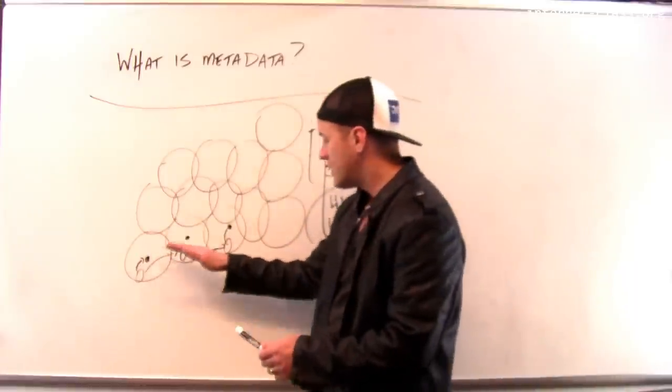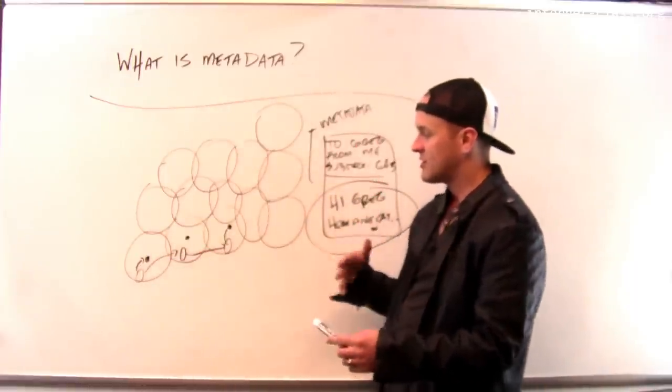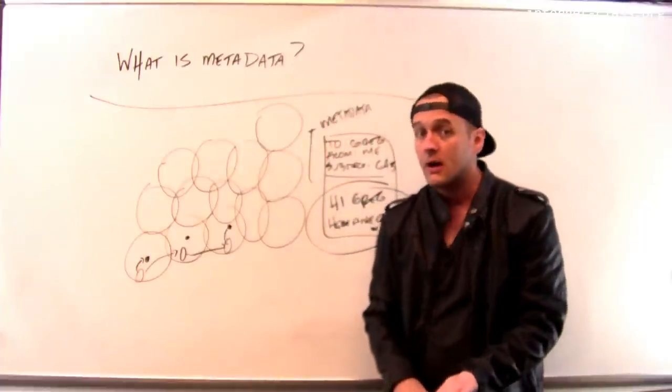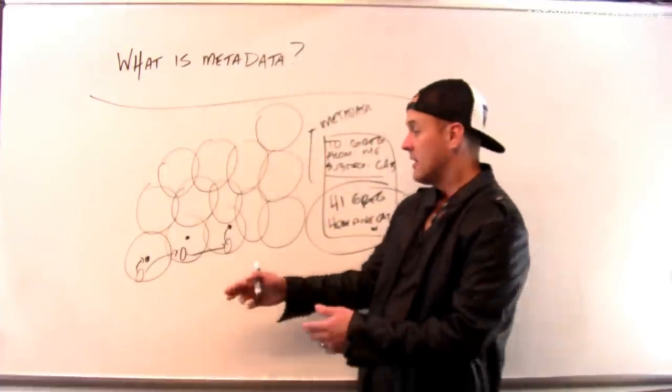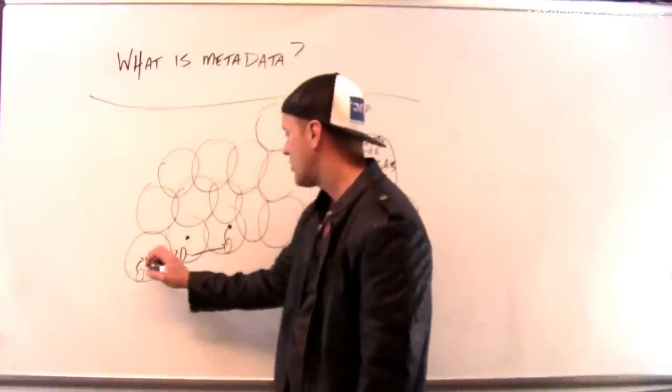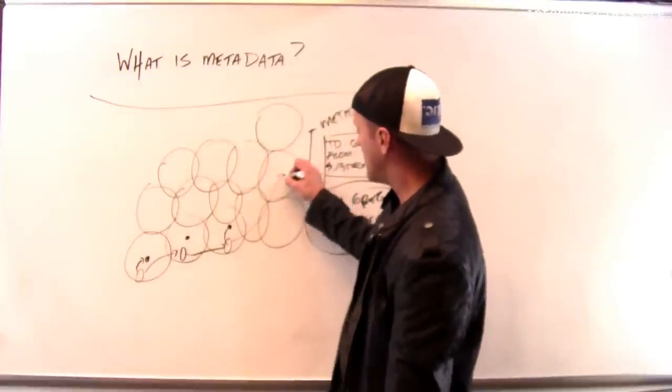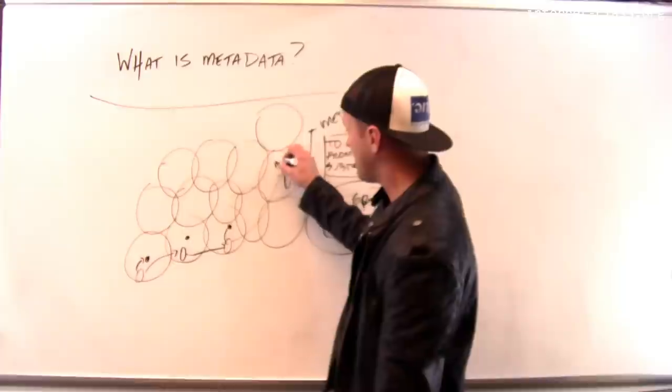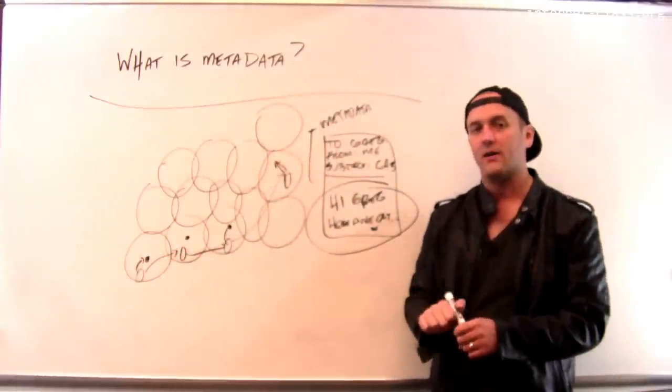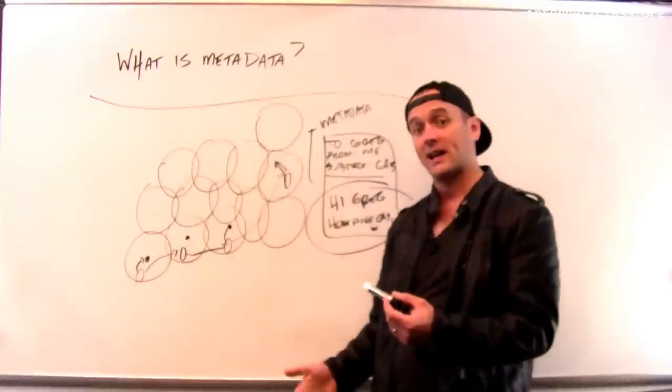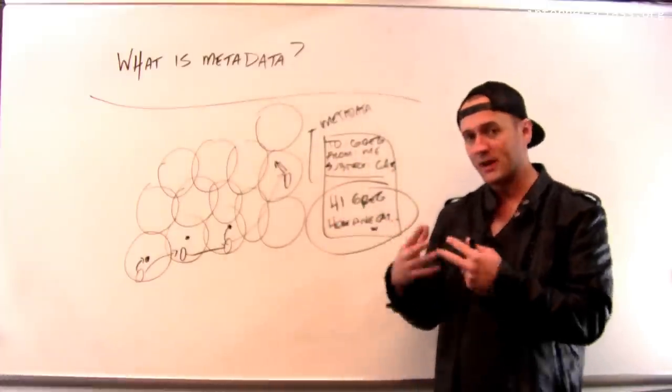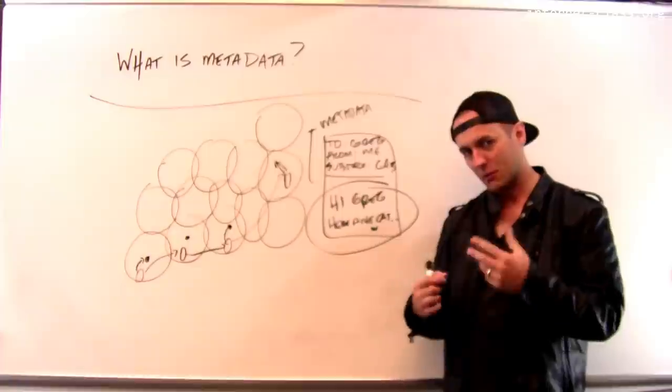But if I use that information over time, it turns out that I can determine things probably like where you live, where you work. Because I can see you starting off in the morning. Maybe you send some text messages from home. And then you drive to work. And then you're over here. And you send some text messages at work. And over time, I can build up a coarse grained profile of your movement. I can find out potentially where you are. And so this is one of these examples of how metadata can be so powerful.